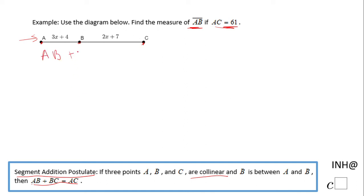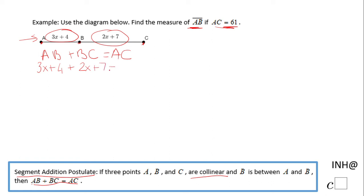So the first thing I'm going to write is AB plus BC equals AC. That's the geometry. Then we replace the segments AB and BC with the expressions given: AB is 3x plus 4, BC is 2x plus 7, and AC was given to us as 61. Now we have an algebraic equation.